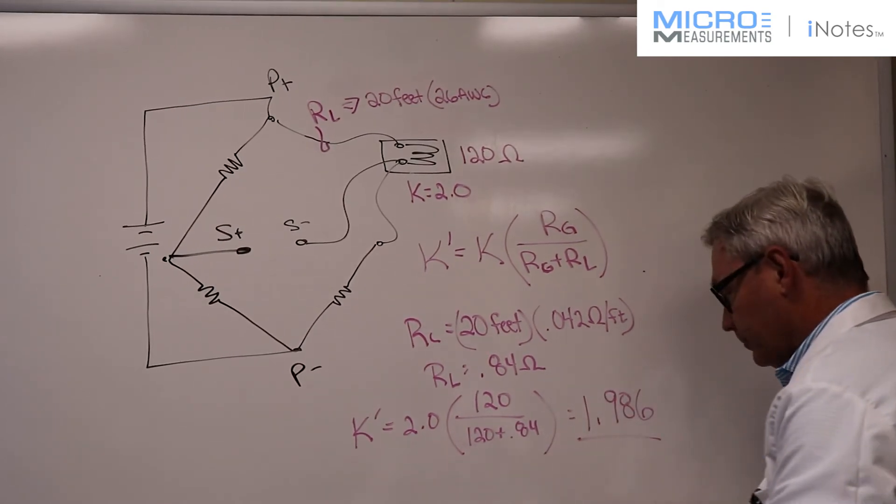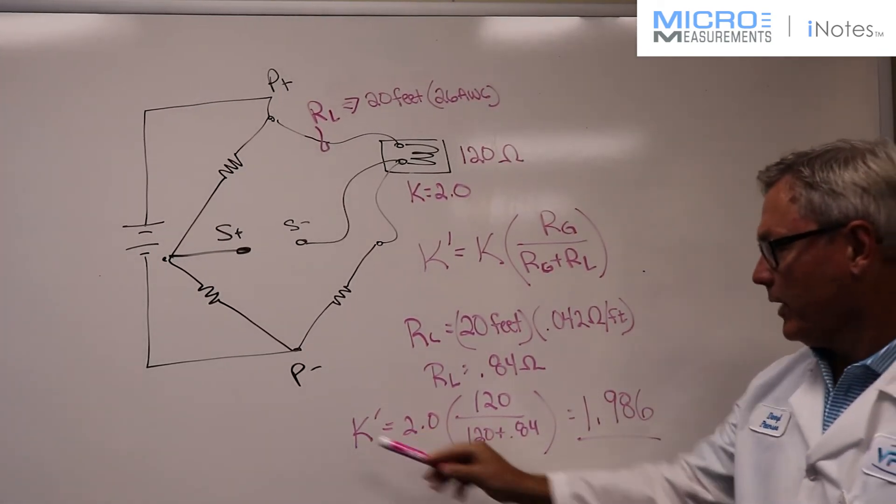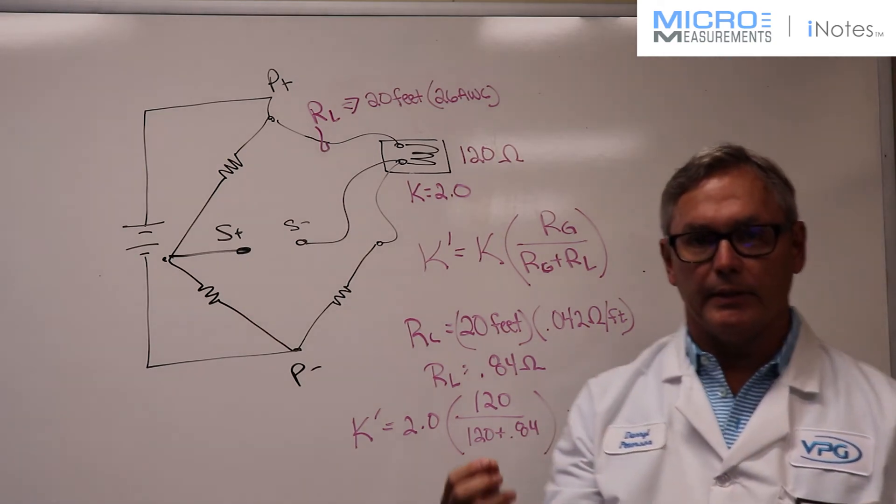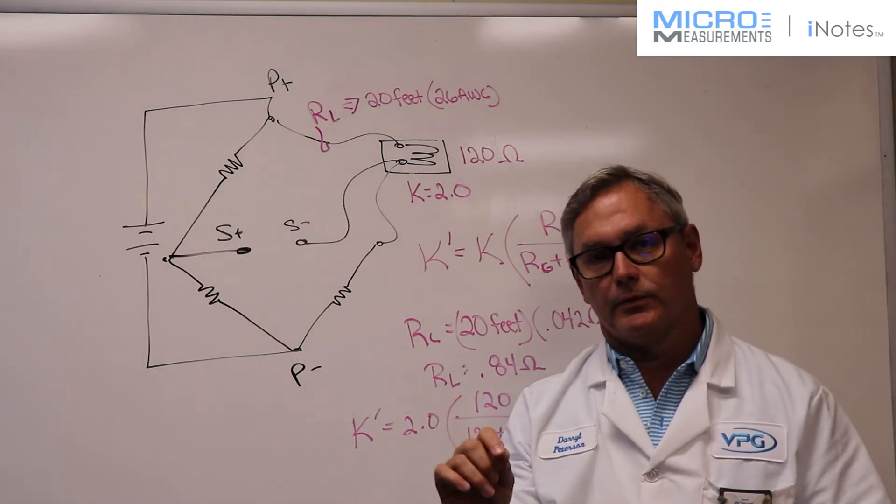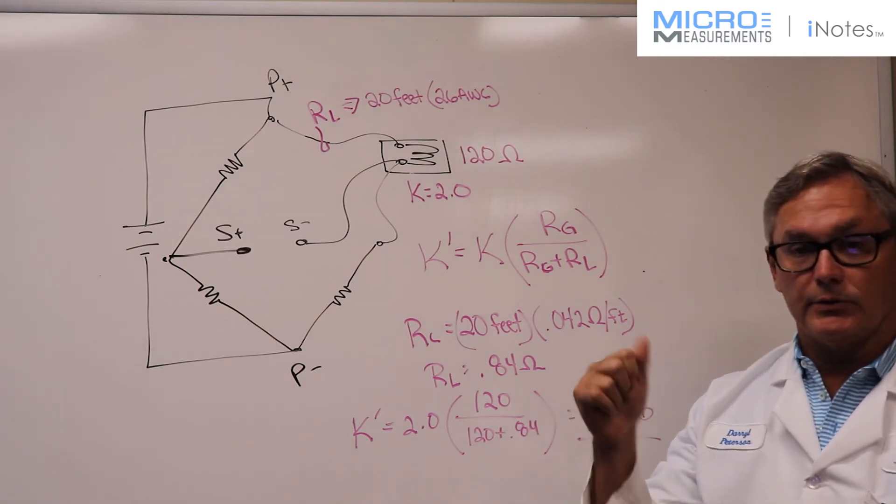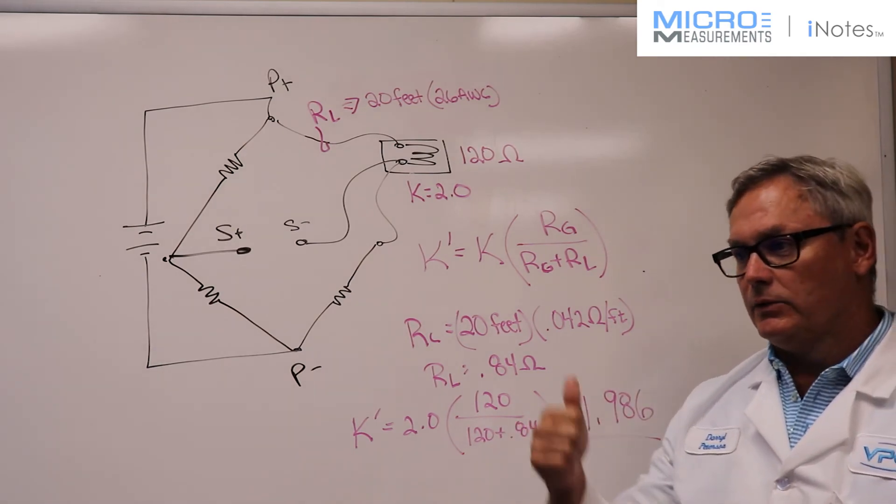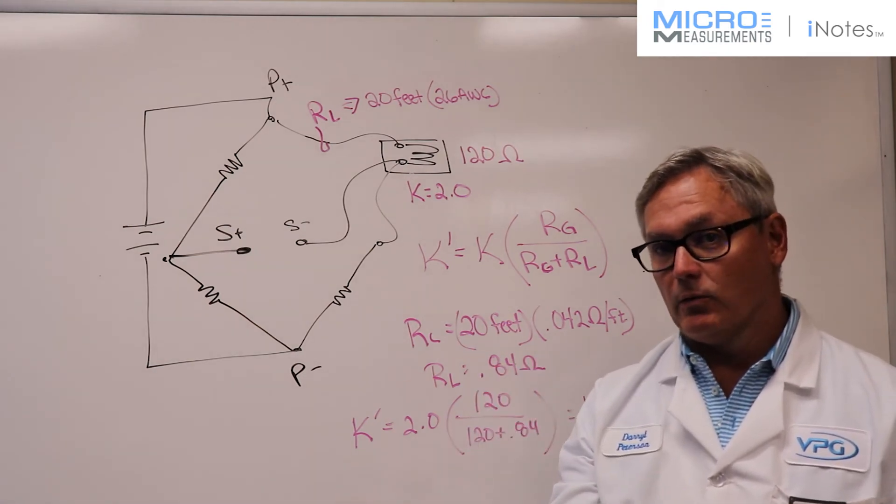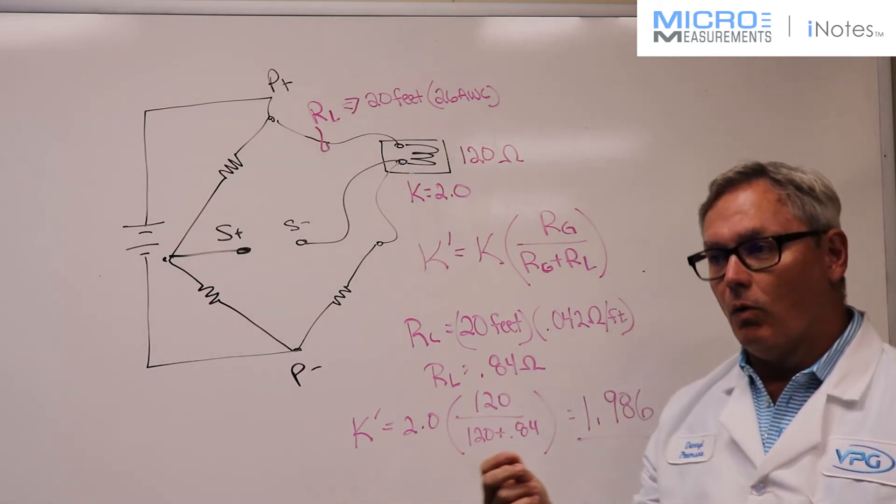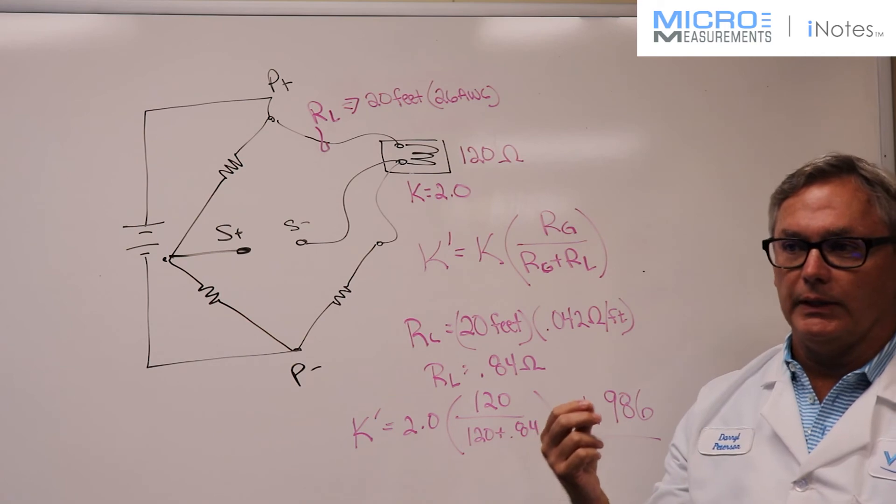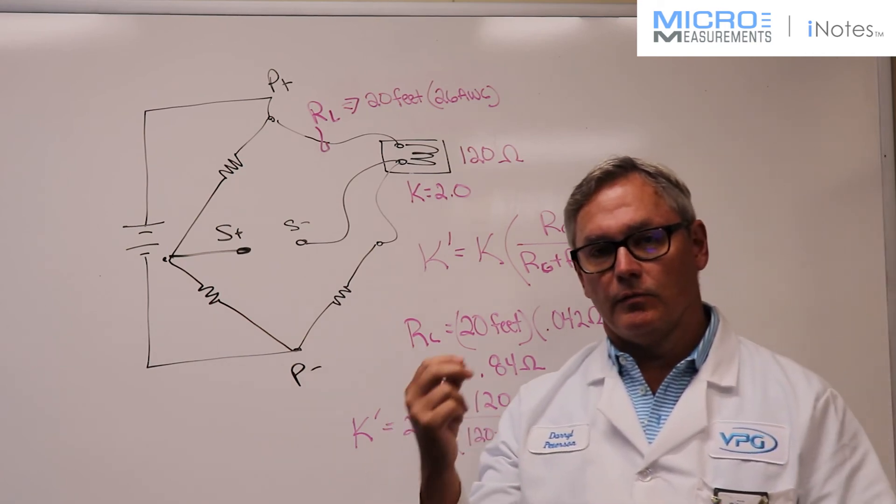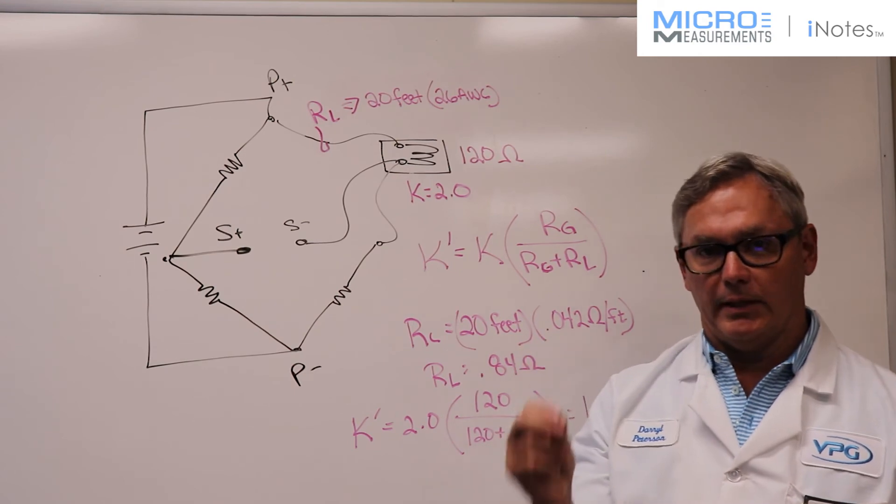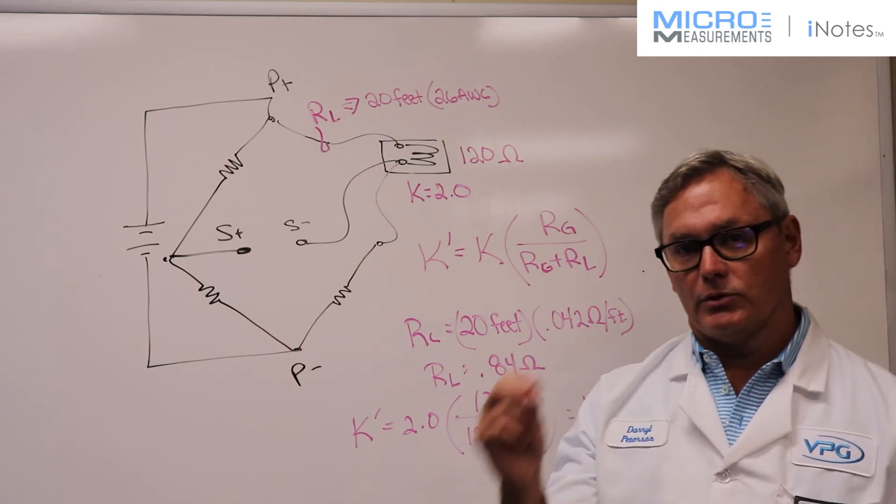So what do you do with that? This K prime is equal to 1.986. And what we do with it is we input that new gauge factor into a strain indicator, into our data acquisition systems if they're not already correcting for lead wire resistance, or we would input it into the calculations we would use for a signal conditioning amplifier in order to calculate what the simulated strain is when we use shunt calibration.